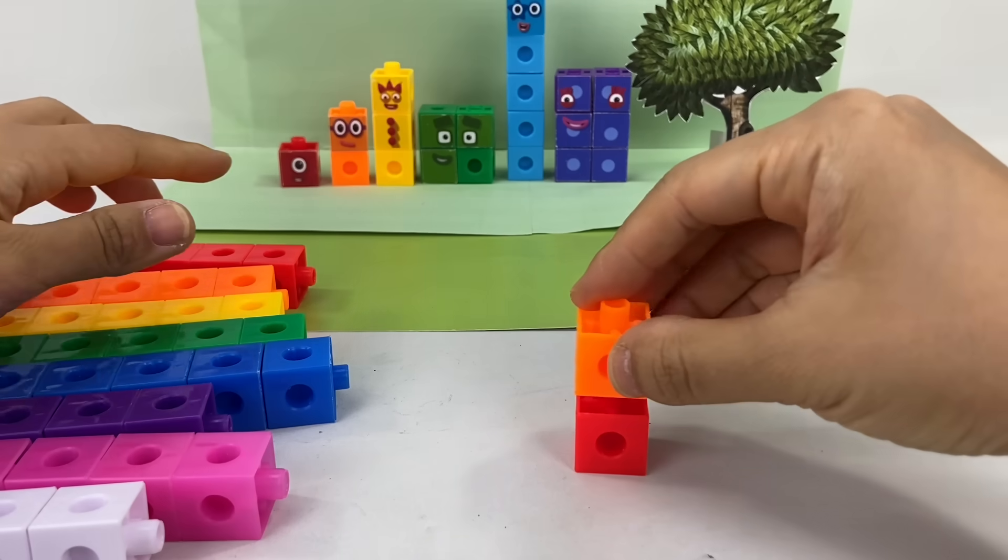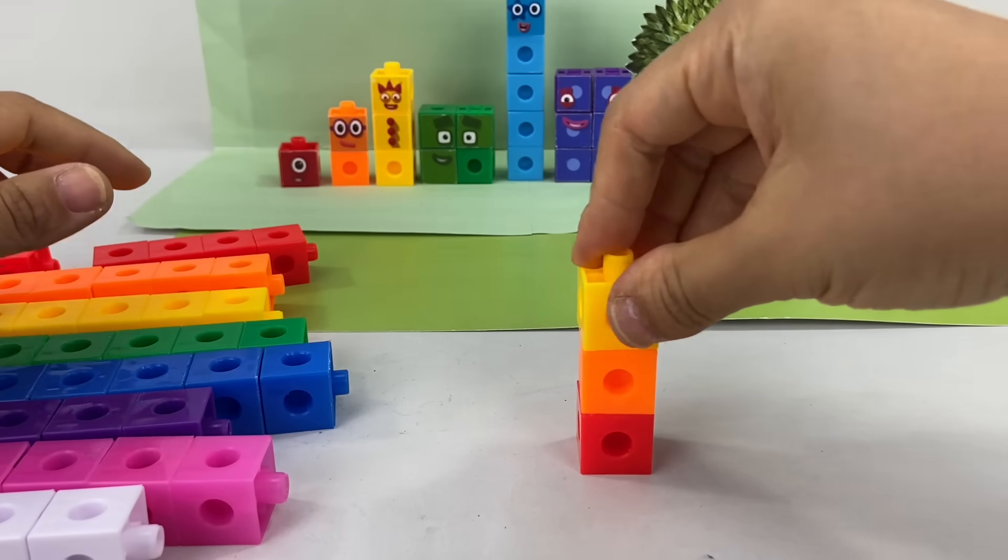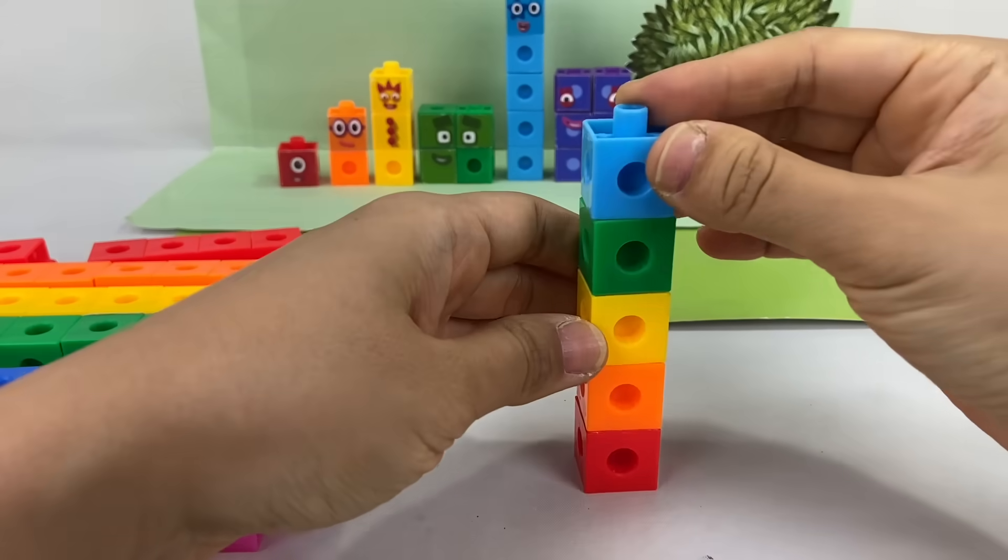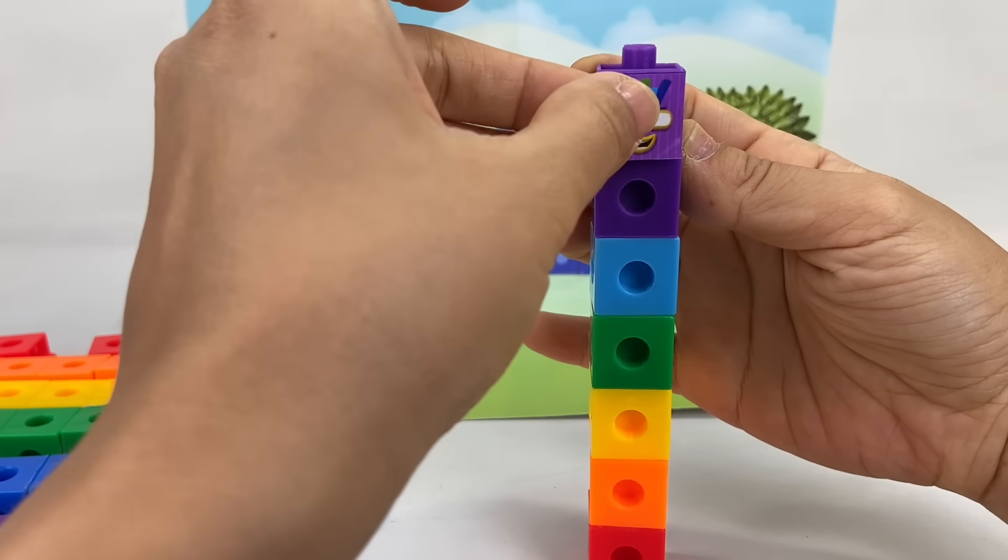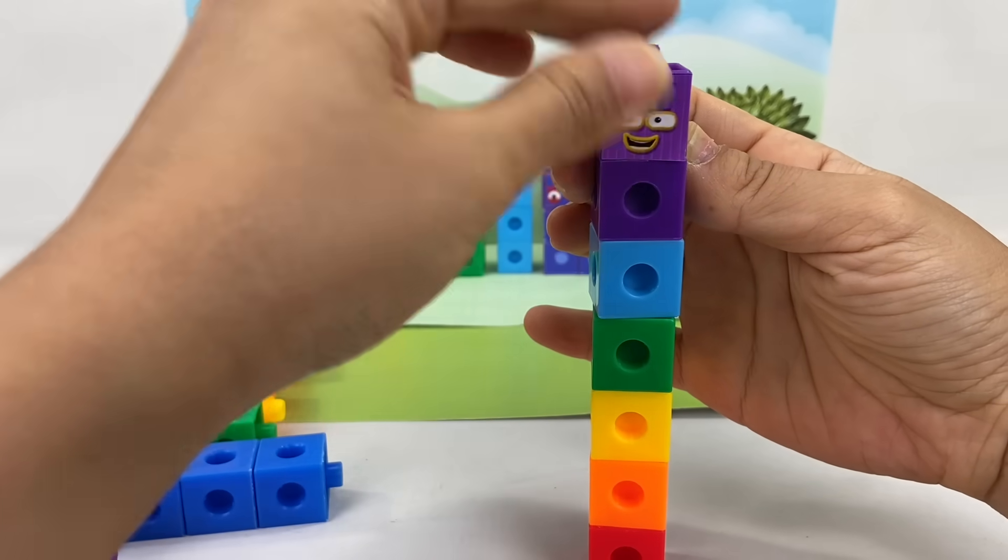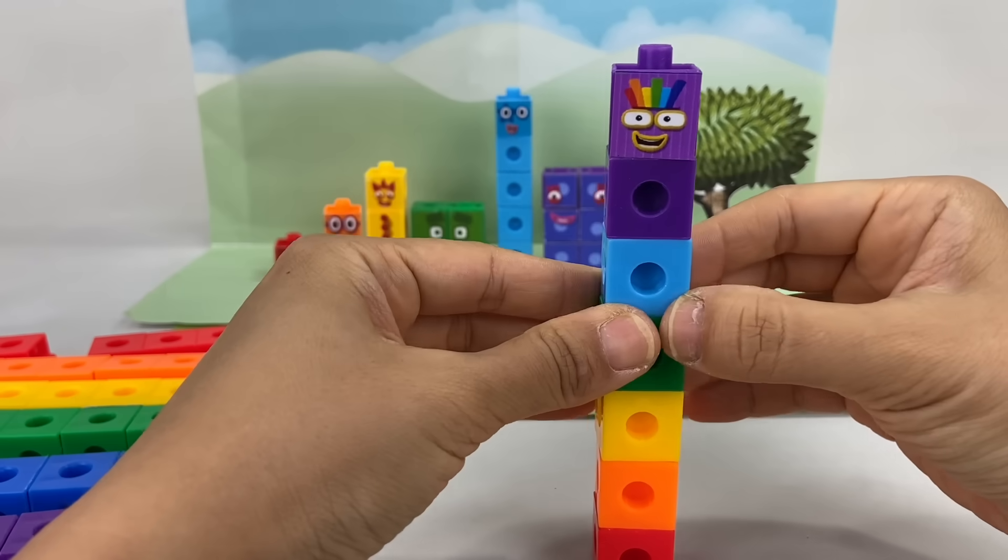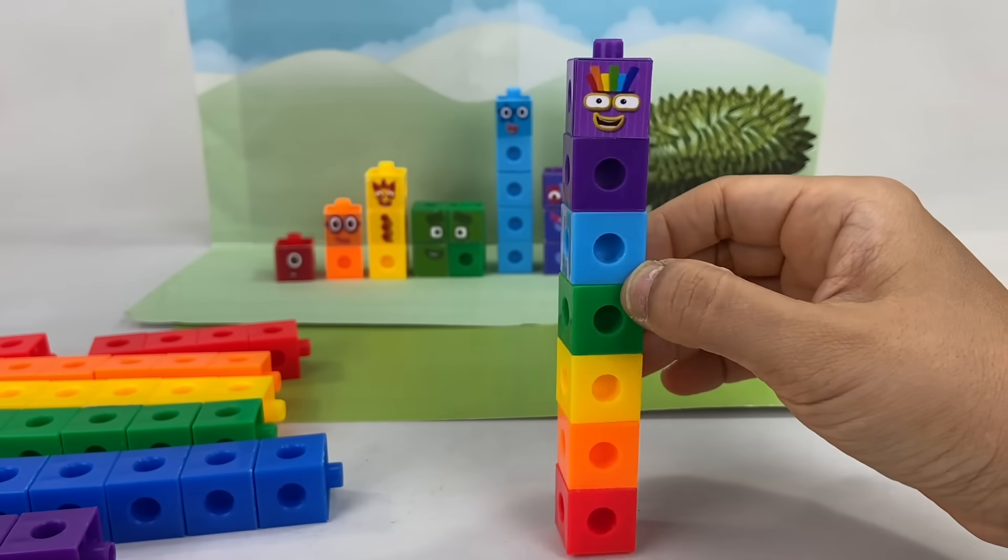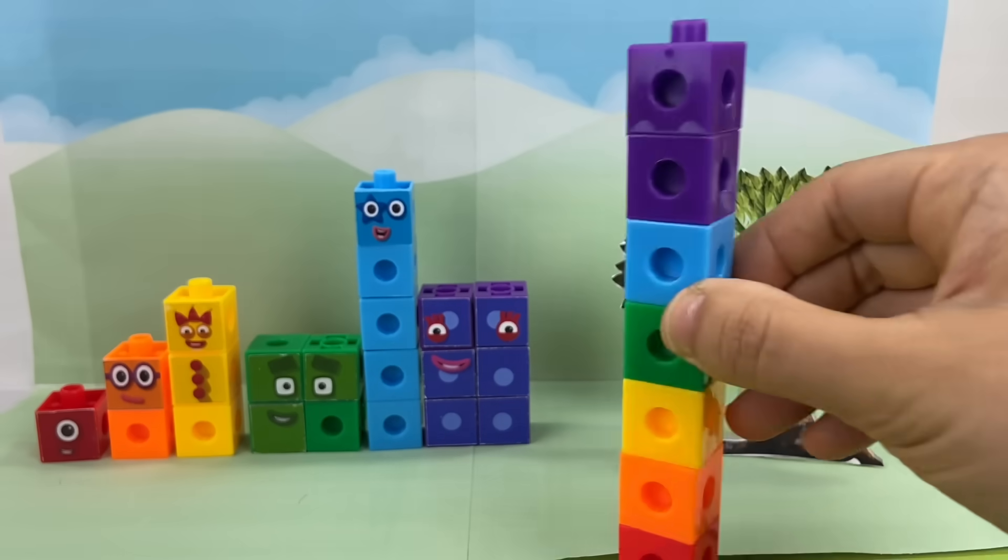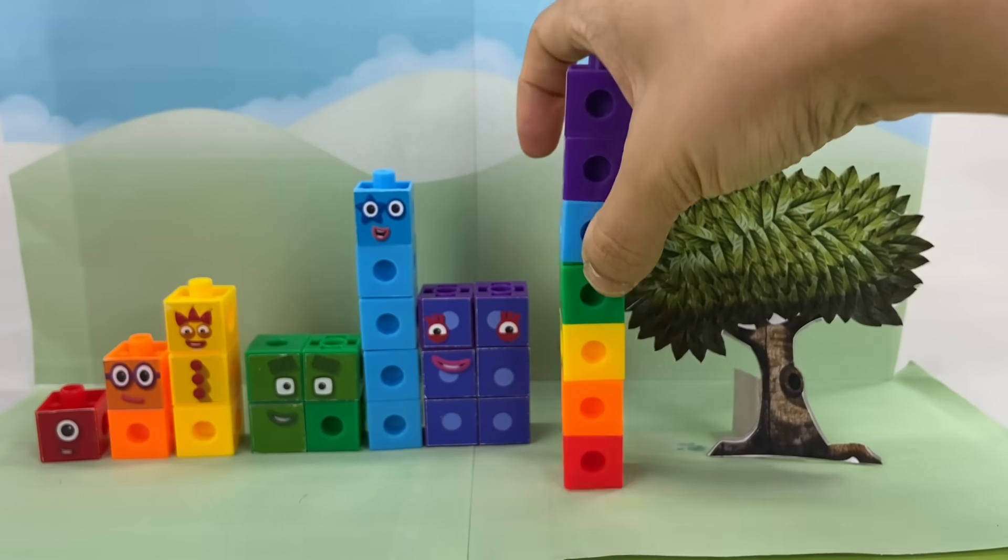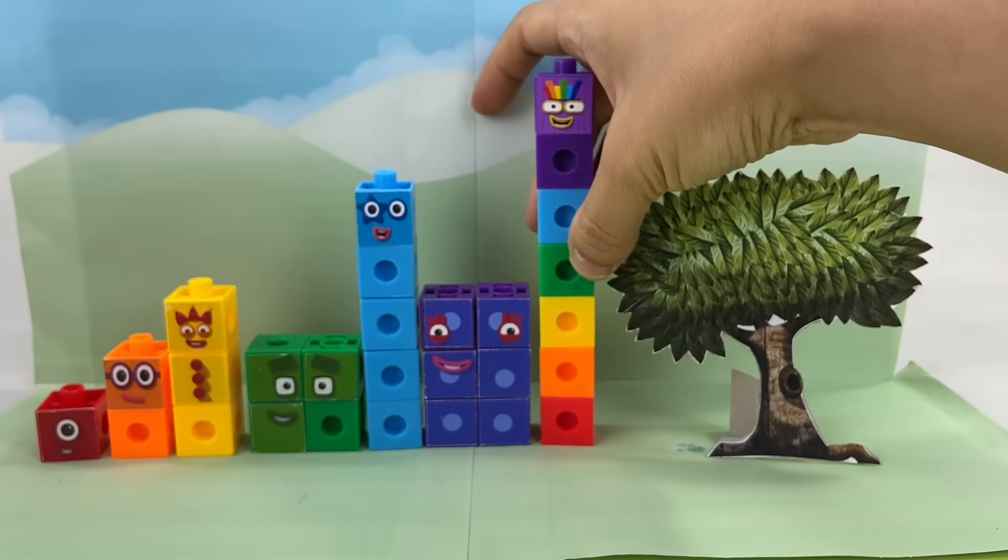Speaking of luck, the next Numberblock is the luckiest in Numberland! It's Numberblock 7! He's made up of all the colors of the rainbow! And he has rainbow-colored hair! Seven! I am seven! Am I in heaven? No! You're in Numberland! Lucky me!